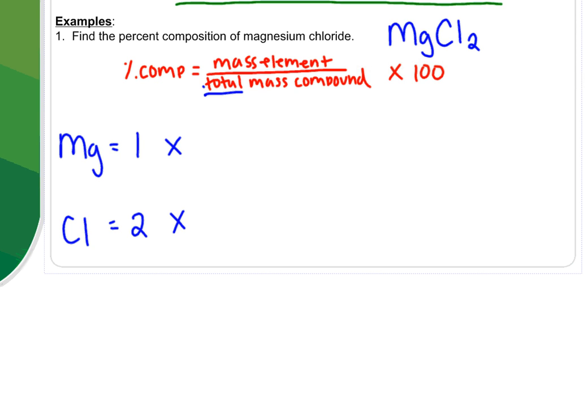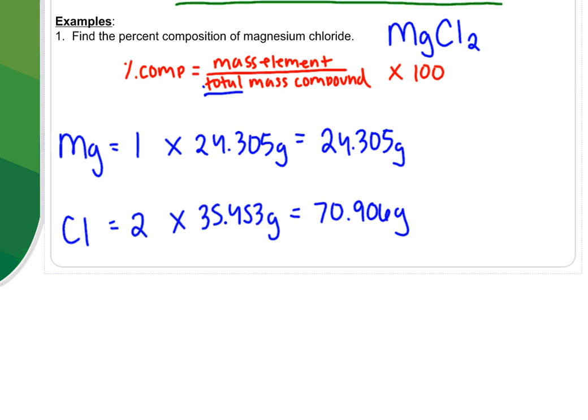I'm going to multiply those numbers by their mass on the periodic table. So if I look up magnesium, it has a mass of 24.305 grams. If I look up chlorine, it has a mass of 35.453 grams. So for magnesium, it obviously comes out to the same number, 24.305 grams of magnesium total in this compound. But with chlorine, since I multiply it by two, I get a total of 70.906 grams. And then I just add these up to get a grand total. So my grand total is 95.211 grams for magnesium chloride.